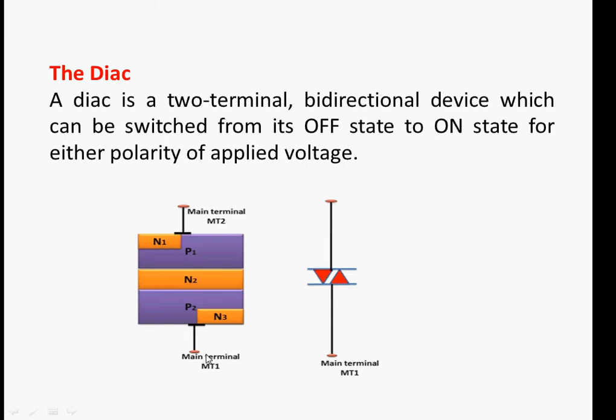When MT1 is positive and MT2 is negative, then the current will flow along this side, like the current will flow P2 to N2 to P1 and to MT2. If this terminal is positive, this is negative, the current will flow from here P2 to N2 to P1 to N1 and then through MT2. When the voltage is the other way round,